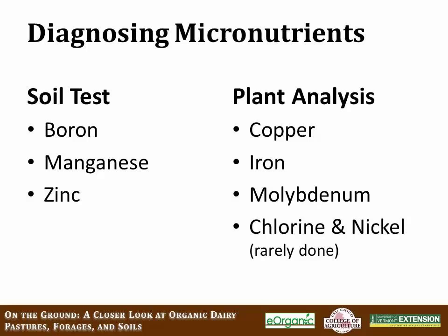Many micronutrients are diagnosed through plant tissue analysis, including copper, iron, molybdenum, chlorine, and nickel. As for when to apply micronutrients, some apply very small quantities on a yearly basis, others every three or four years. It is dangerous to continually apply something when we don't know if it's needed, because many micronutrients can build up in the soil. It's important to understand crop requirements and use tools such as soil tests, crop observations, and plant tissue tests.